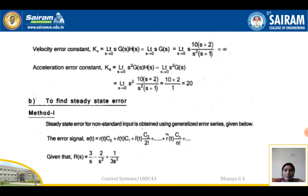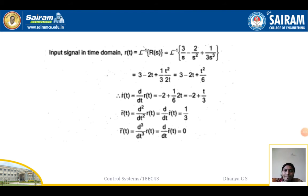For the non-standard input, the steady state error is obtained using the generalized error series: e(t) = r(t)·c₀ + ṙ(t)·c₁ + r̈(t)·c₂/2! + ... Taking the inverse Laplace transform of r(s) = 3/s − 2/s² + 1/(3s³) gives r(t) = 3 − 2t + t²/6. Differentiating: ṙ(t) = −2 + t/3, r̈(t) = 1/3, and r⃛(t) = 0.